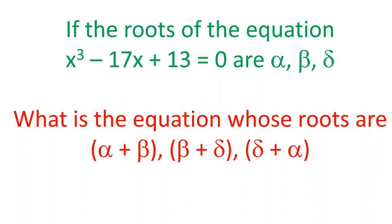The given equation is x³ - 17x + 13 = 0 and its roots are alpha, beta and gamma. We have to form the equation whose roots are alpha plus beta, beta plus gamma, and gamma plus alpha.